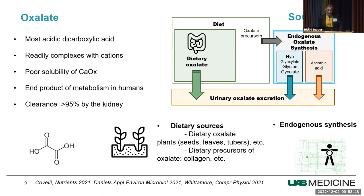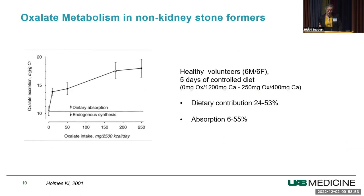In a landmark paper published 20 years ago, healthy volunteers were put on a controlled diet with different amounts of oxalate and calcium, and 24-hour urine oxalate was measured. This led to the conclusion that dietary oxalate contributed between 24 and 53% of urine oxalate — quite a bit of variability. The absorption of oxalate varied between 6 and 55%.